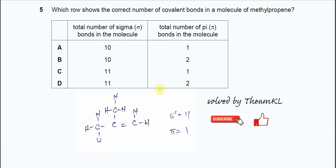Question 5. Which row shows the correct numbers of covalent bonds in the molecule of methylpropene?